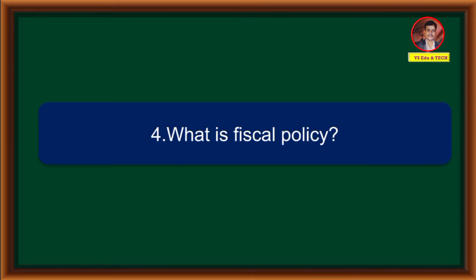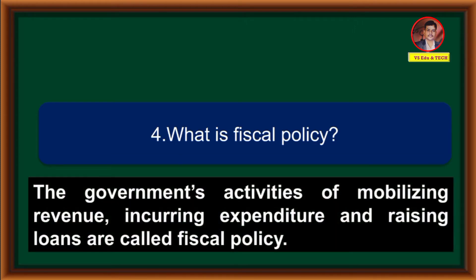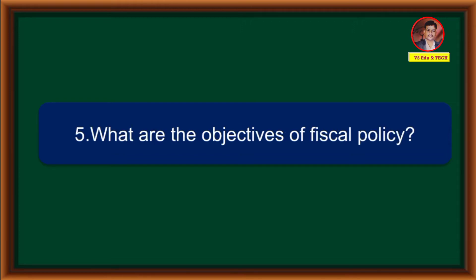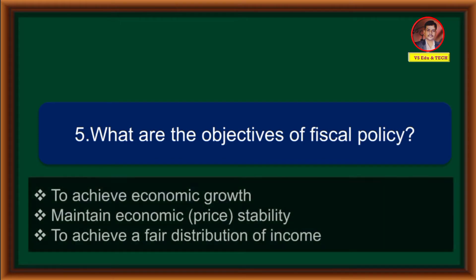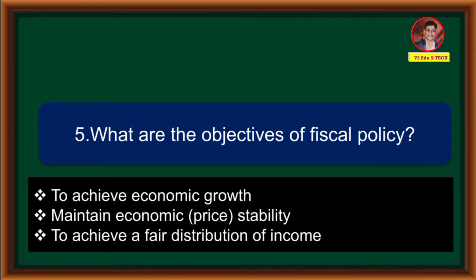What is fiscal policy? The government's activities of mobilizing revenue, incurring expenditure and raising loans are called fiscal policy. The objectives of fiscal policy are: to achieve economic growth, maintain economic stability, and to achieve a fair distribution of income.